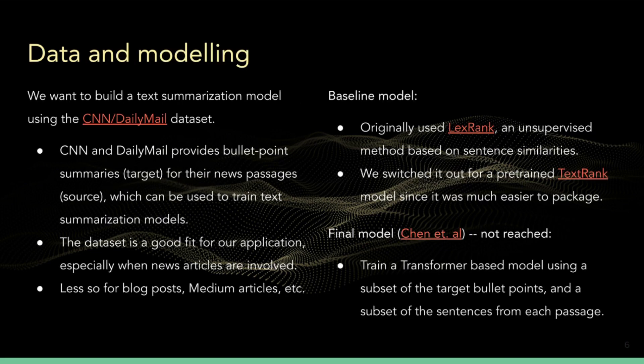Our goal is to build a text summarizer, and our plan is to do this by building a text summarization model using the CNN and Daily Mail dataset. This dataset consists of a collection of news articles along with a summary of a few bullet points. They come from CNN and Daily Mail, which have a habit of providing such summaries, and as a result makes a fairly good dataset for our tasks, since many RSS feeds will be about news.